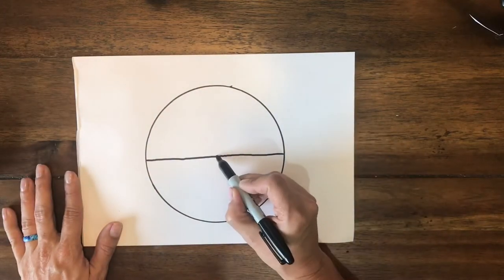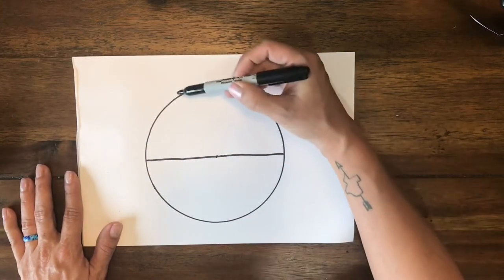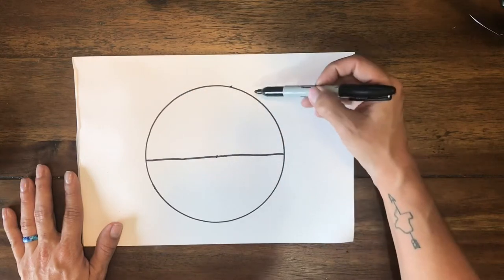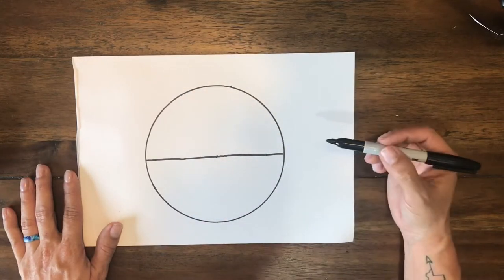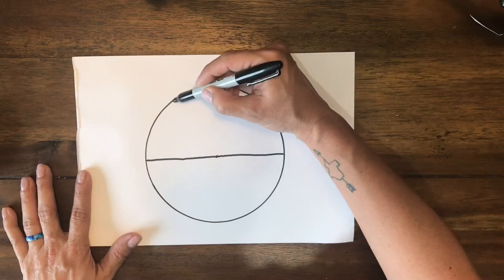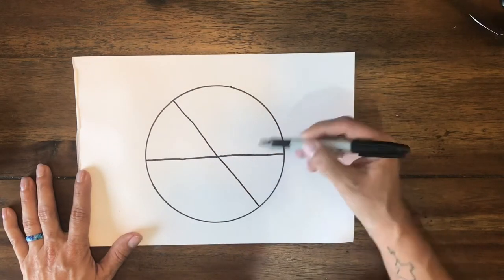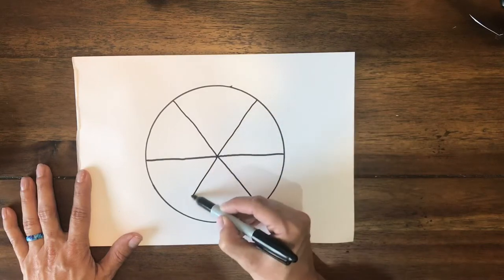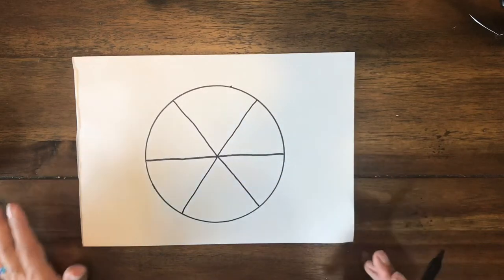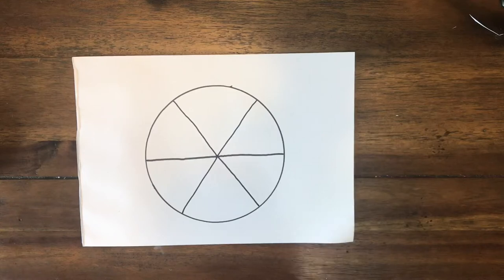Now I'm gonna turn mine sideways and that dot, hopefully you can still see it, I'm gonna make an X that goes right across that dot. It's gonna look a little bit like a pizza and again it does not have to be perfect.